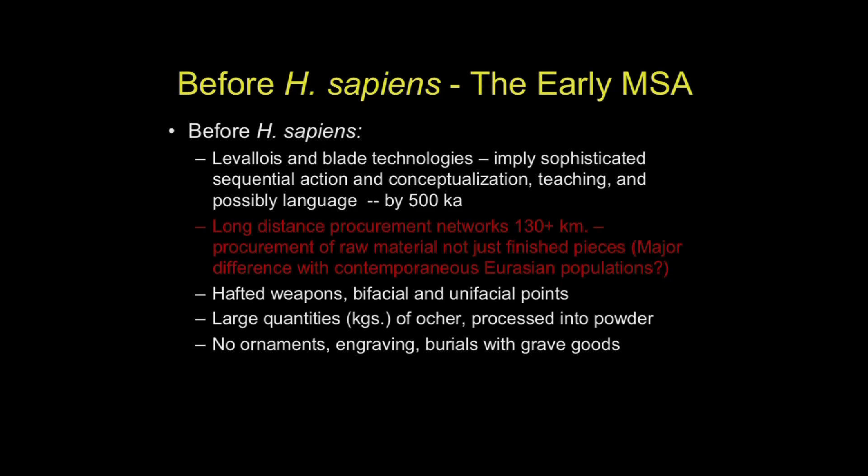So what about before Homo sapiens, in the early Middle Stone Age? If all of this is characteristic of the last 200,000 years, what do we know about the development of this and what happened before? I've put in red what we have in Africa that is not, I think, shared with Neanderthals — because when we go back, we're going back to the last common ancestor period and the divergence time.